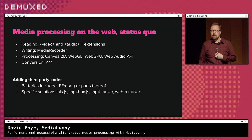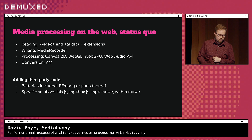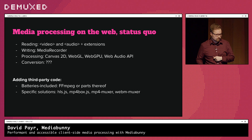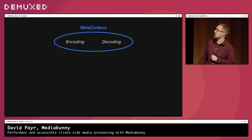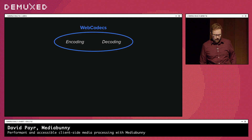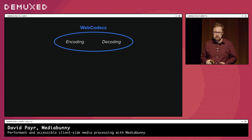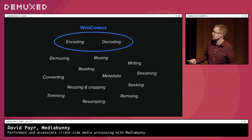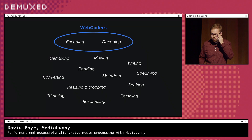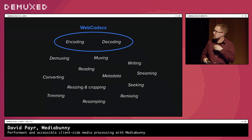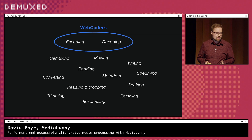There are plenty of libraries solving one-off use cases like HLS.js or MP4Box.js. And then of course there's WebCodecs, which does encoding and decoding. I think this API is awesome — it gives web developers atomic building blocks that are not opinionated, that they can build anything on top of. But if you actually want to do media processing, you need to do way more: demux, mux, read, and write files. And this is what MediaBunny provides, integrating nicely with the WebCodecs API.